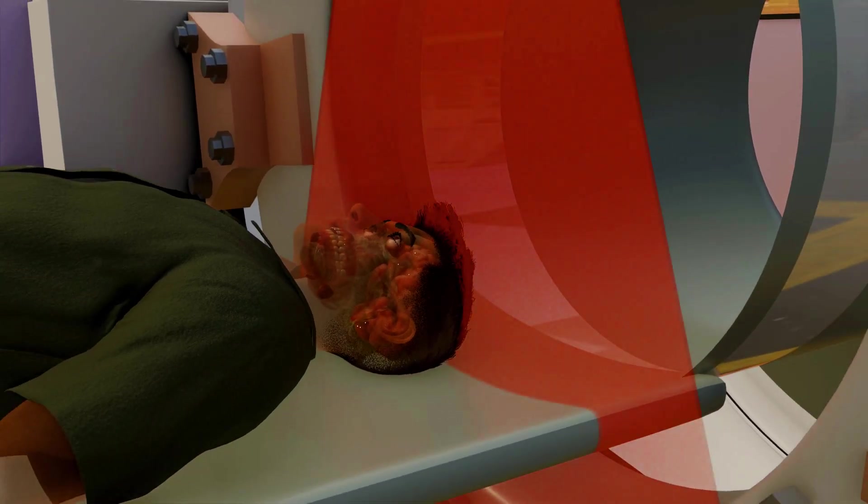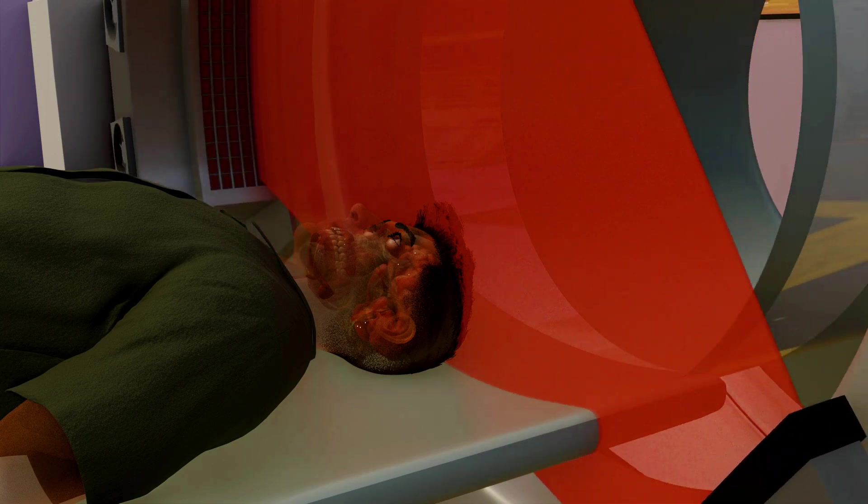For example, the X-rays first focus on a specific area, referred to as slice number 1. The machine then scans this slice by rotating around the patient's head. During the rotation, multiple samples are captured, and the machine's computer system continuously collects this data.